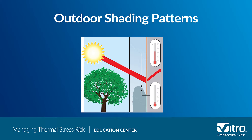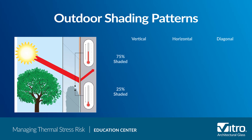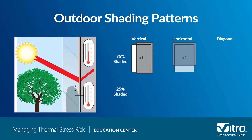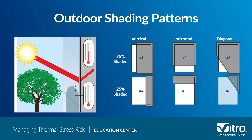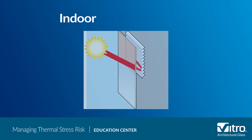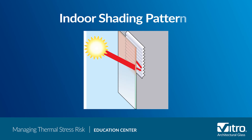You will also need to consider your project's outdoor shading patterns. Since outdoor shading is seasonal, it is one of the most dynamic factors that can affect glass. One way to deal with this issue is to minimize the locations within your project where less than 50 percent of the glass panel is covered with shade, which will help you avoid temperature extremes.